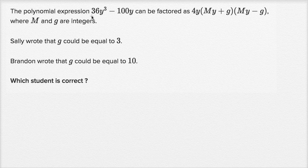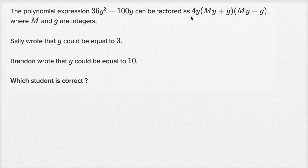The polynomial expression 36y³ - 100y can be factored as 4y(My + g)(My - g), where M and g are integers. Sally wrote that g could be equal to 3. Brandon wrote that g could be equal to 10. Which student is correct?